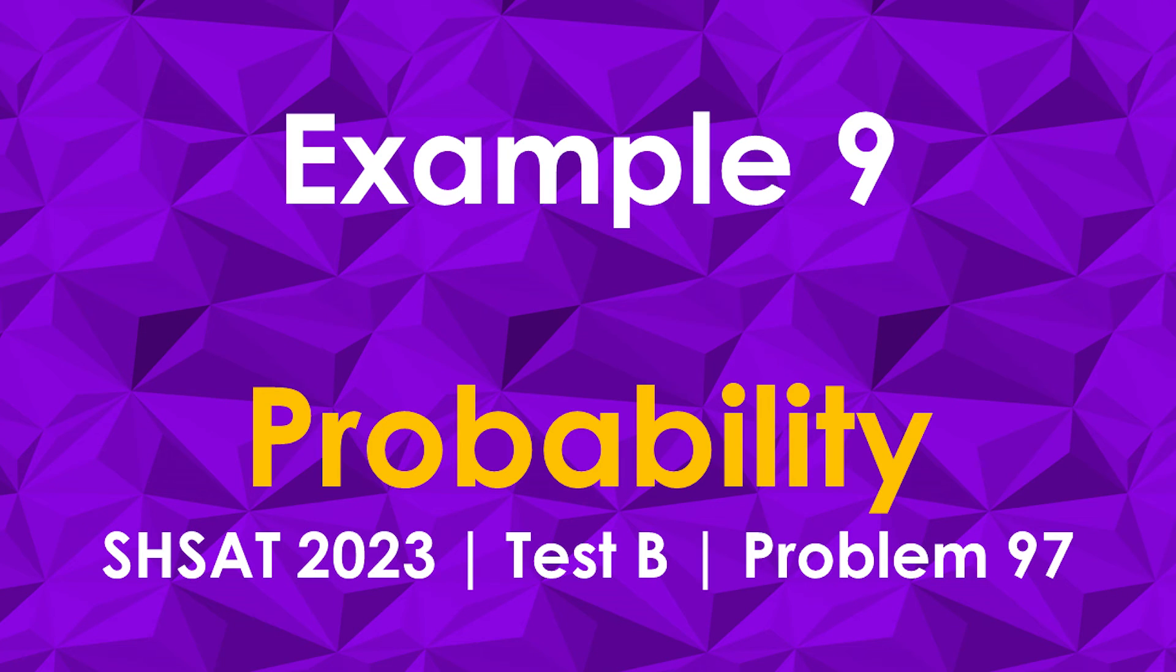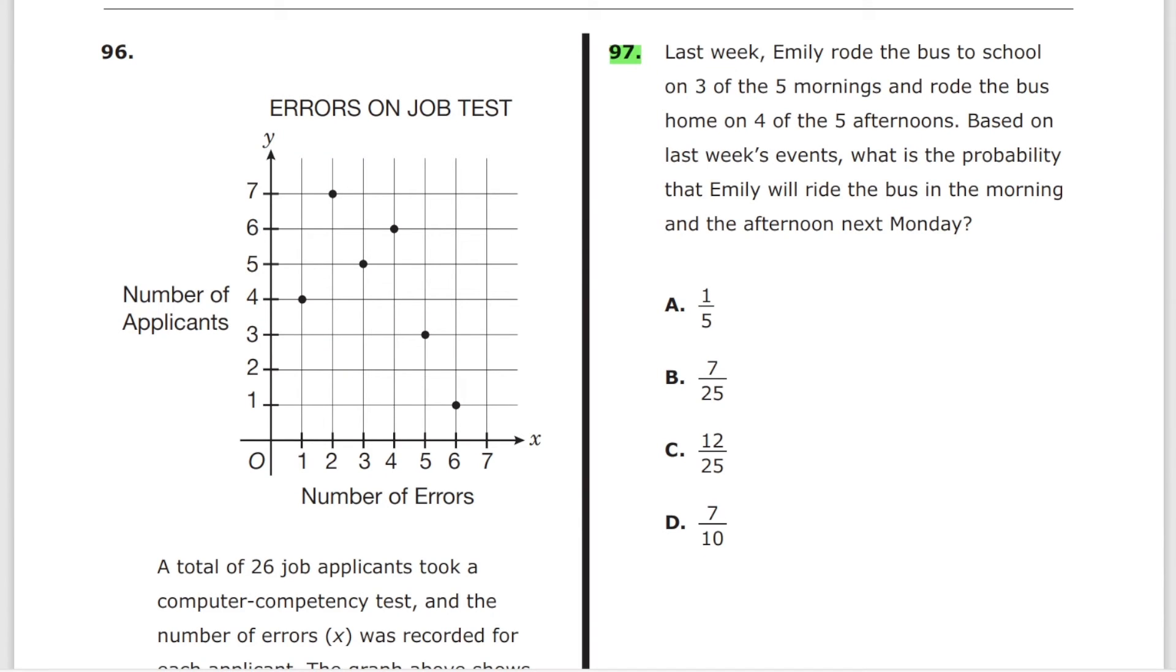Problem 97 from test B. Last week, Emily rode the bus to school on three of the five mornings and rode the bus home on four of the five afternoons. Based on last week's events, what's the probability that Emily will ride the bus in the morning and the afternoon next Monday? What's the probability that she will do morning on Monday? 3 out of 5. What's the probability that she will do afternoon on Monday? That's 4 out of 5.